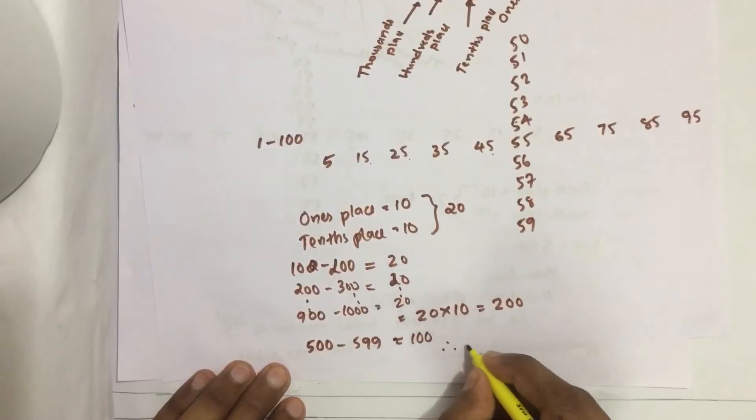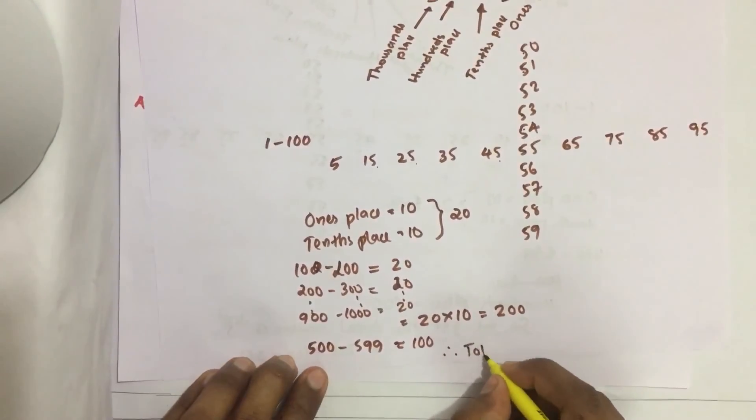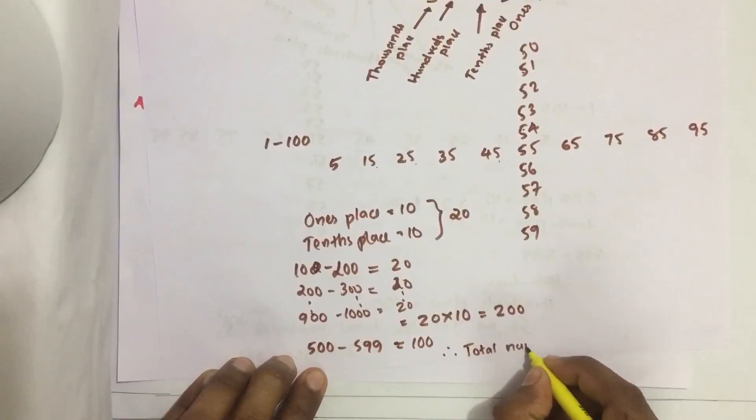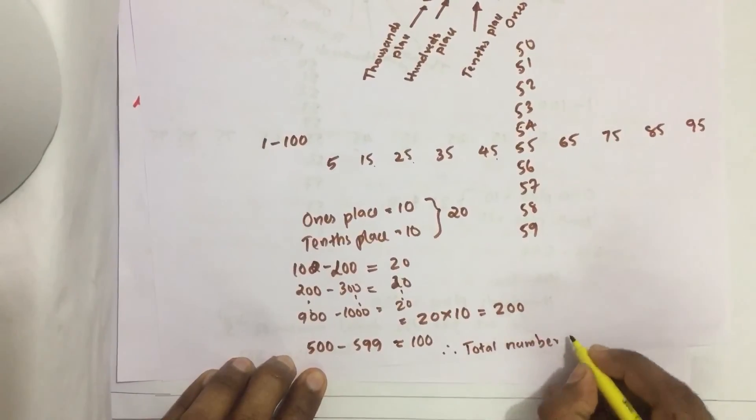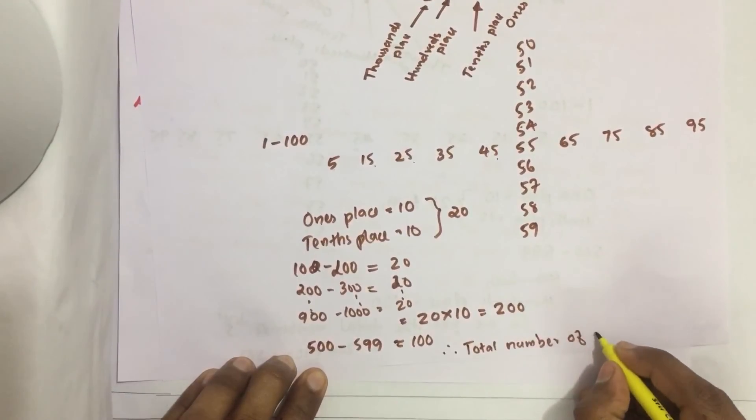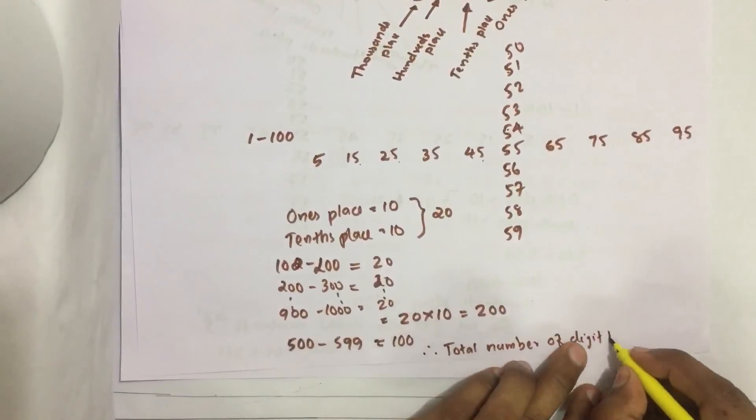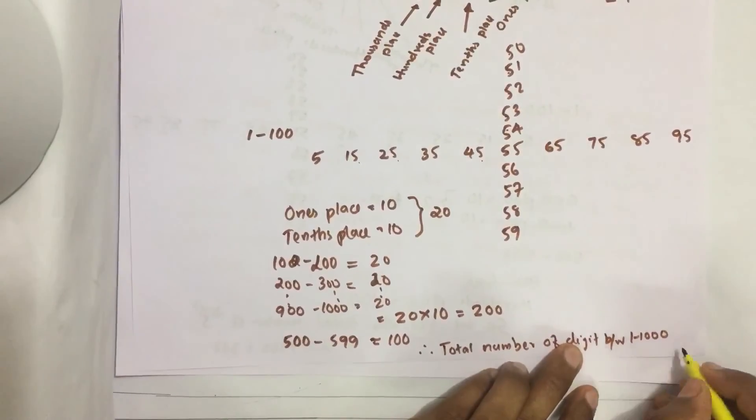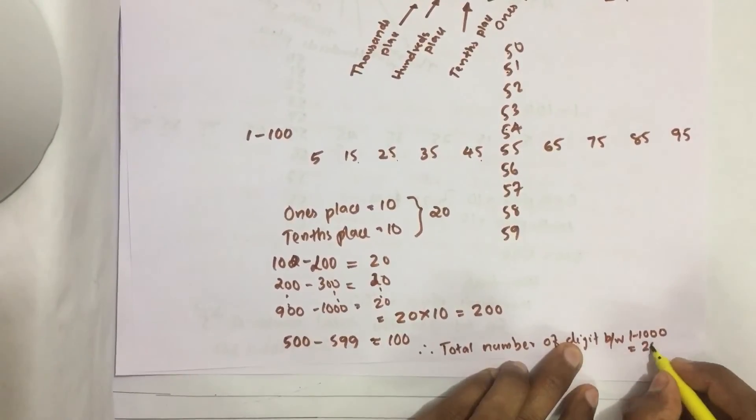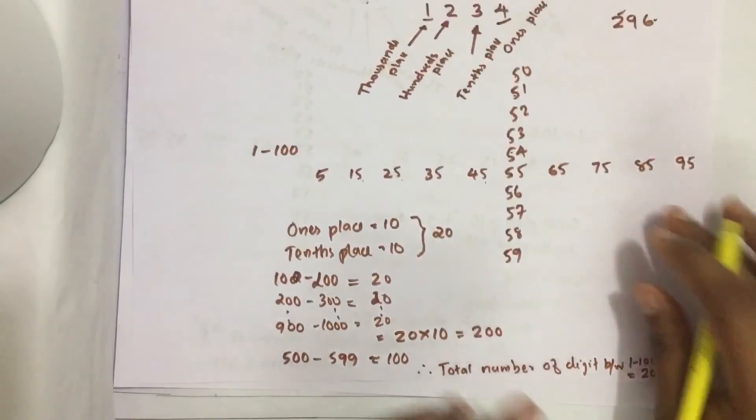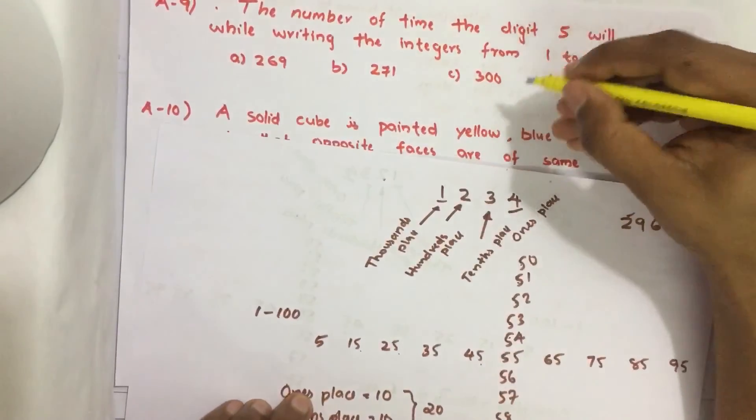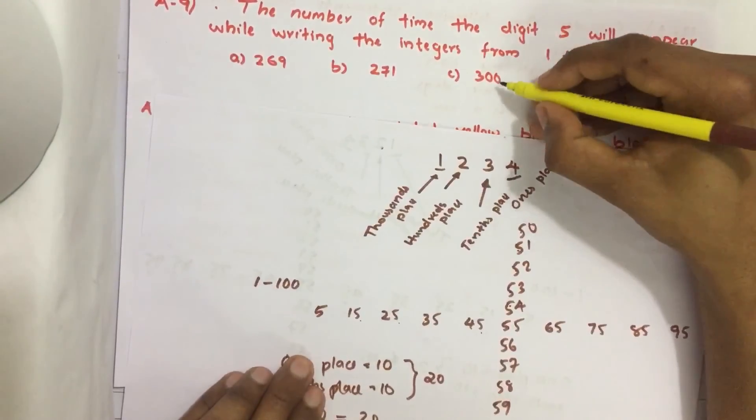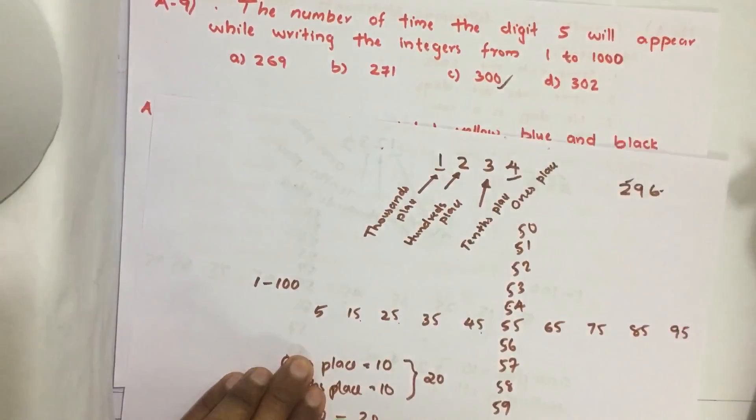Therefore, total number of digit 5 between 1 to 1000 equals 200 plus 100, that is 300. Option C is the answer. So thank you.